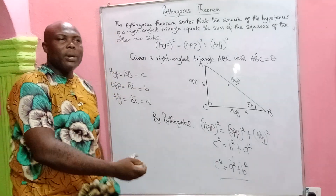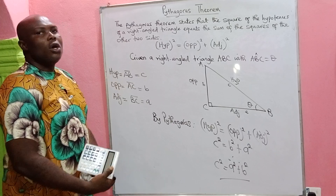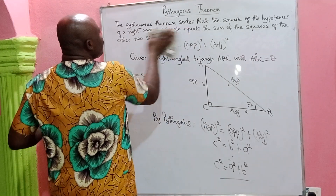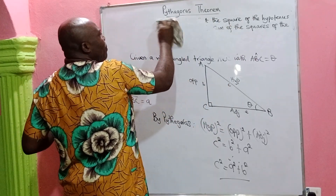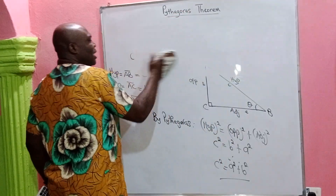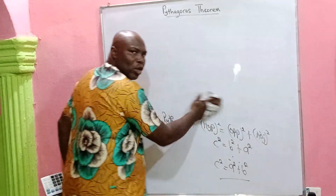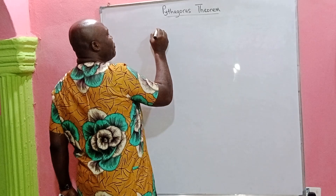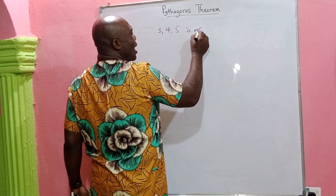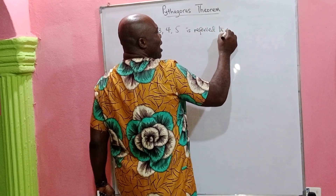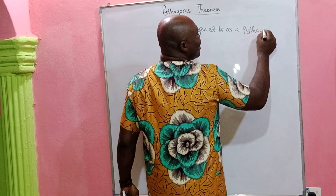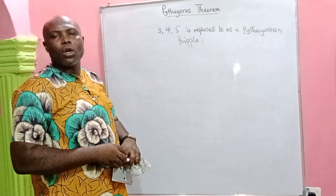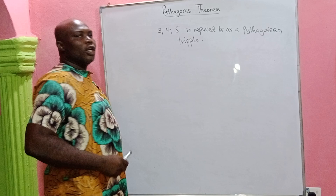Before we take an example, we need to know what Pythagorean triples are. A Pythagorean triple is a set of three numbers that satisfies the condition of the Pythagorean theorem. For instance, the numbers 3, 4, 5 are referred to as a Pythagorean triple, because this set of three numbers satisfies the condition of the theorem.